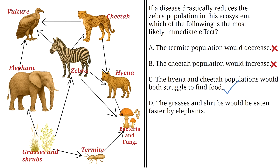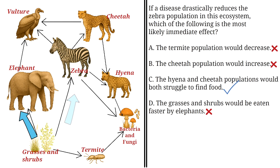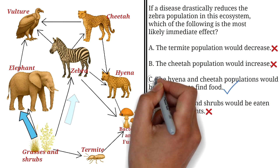Even though we have gotten our answer, let's check out the last option. D: The grasses and shrubs would be eaten faster by elephants. This is incorrect. Zebras and elephants both consume grasses and shrubs. If the zebra population decreases, there would be less competition for these plants, potentially leaving more for elephants. However, this would not necessarily cause elephants to eat faster — it simply means more grasses and shrubs are available. So C is the correct answer.